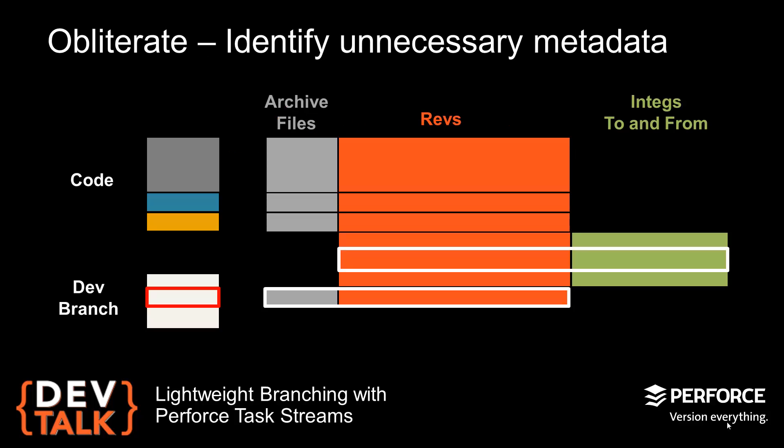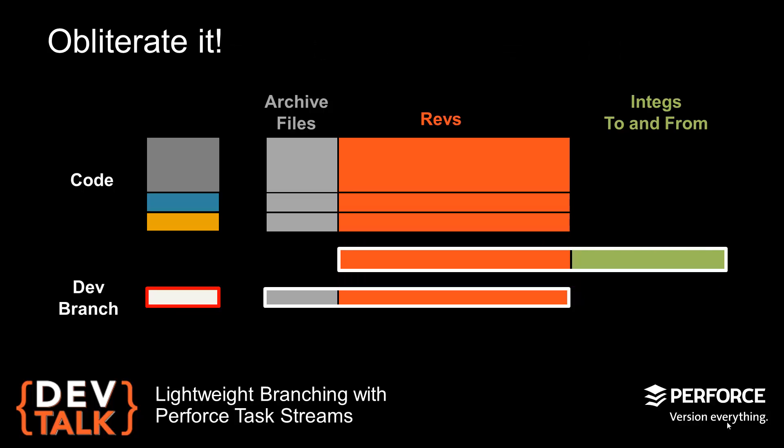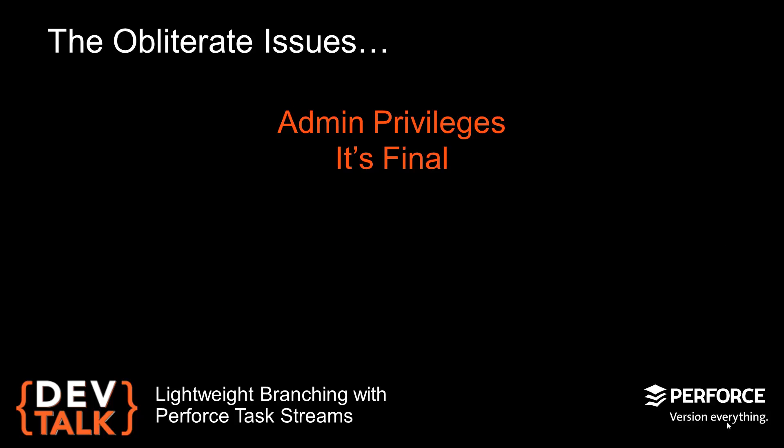The other option is to use the obliterate dismembering technique. Basically, this technique slices off any of the uninteresting metadata and obliterates it. If we highlight the interesting files and metadata it makes it really easy to see the surrounding bloat. Then you just run obliterate, chop out the uninteresting stuff, and only the good stuff is left. But you have to have permissions of a king to use obliterate and that's not an option for everyone. Plus, most developers would be too scared to use obliterate as a routine part of their workflow. And then Perforce came out with Streams.